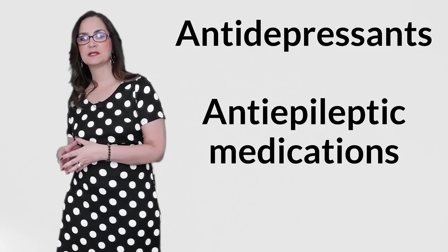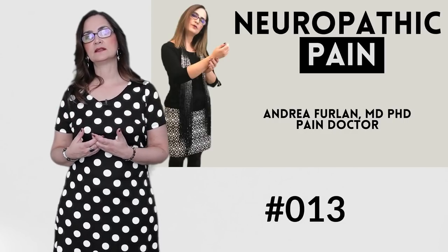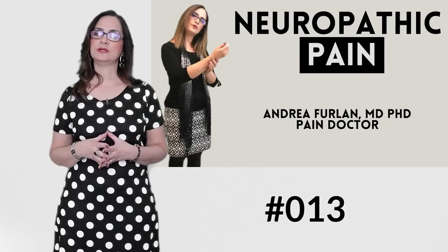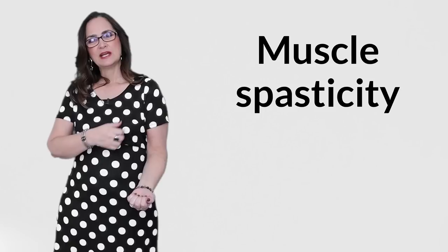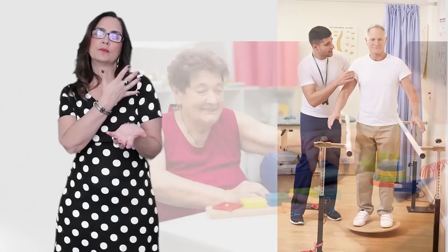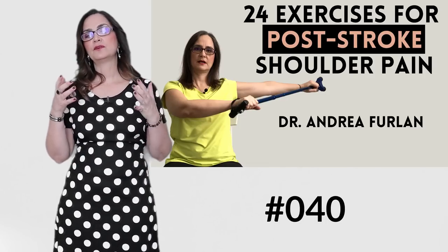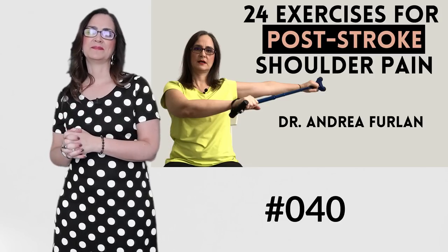When the origin of pain is neuropathic or nerve pain, then the treatment might include medications like antidepressants and anti-epileptic medications. I have a video that I explain the symptoms of neuropathic pain and how it is treated. Check the video number 13. In the case of stroke, the person loses the ability to control the movements of the shoulder and then they develop muscle weakness or muscle spasticity, which is a rigidity of the muscles. They may need special type of physiotherapy, occupational therapy, and if there is spasticity, they may need medications to reduce the muscle spasms. Watch my other video of the 24 exercises for post-stroke shoulder pain. It's video number 40.